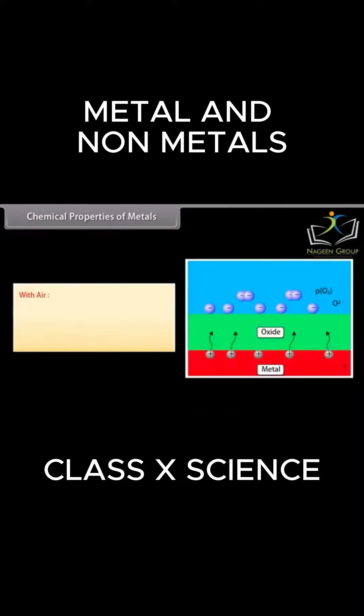With air, when metals come in contact with air, they form metal oxides. There are some metals that show both basic and acidic properties. Such metals are called amphoteric oxides.